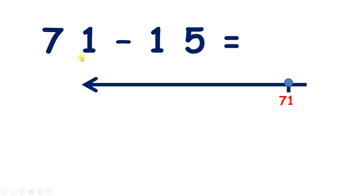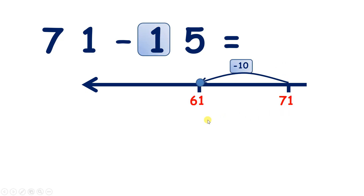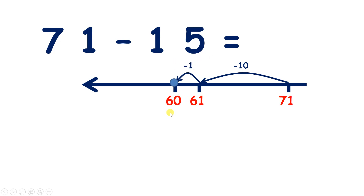Again, we could do this more quickly. The first part is the same — we subtract one ten to give us 61. Now, if we subtract one unit, we get to 60. But we want to subtract five, so we need to subtract four more. And 60 take away four gives us 56.